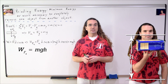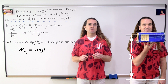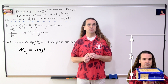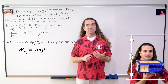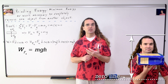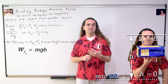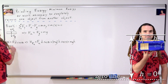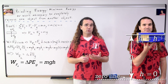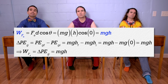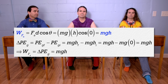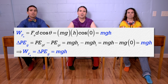Notice, mgh — or mass times acceleration due to gravity times vertical height above the horizontal zero line — equals the gravitational potential energy of an object in a constant gravitational field. If we set the horizontal zero line at the initial height of the book, then height initial equals zero and height final equals h. Then the work done by the force applied to the book equals the change in gravitational potential energy of the book. The force applied puts gravitational potential energy into the system.